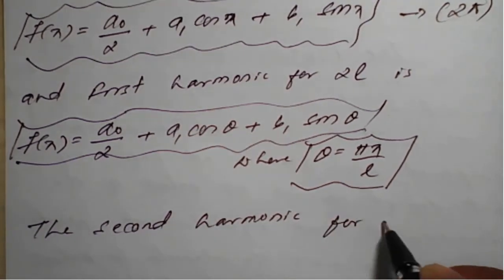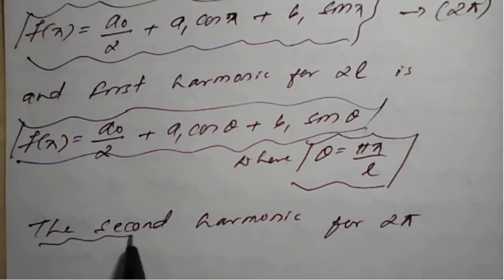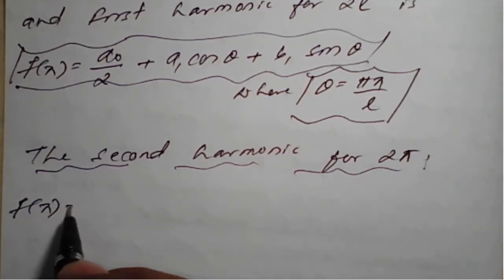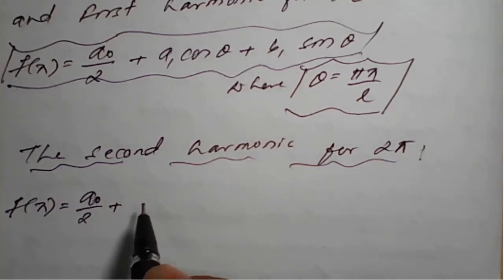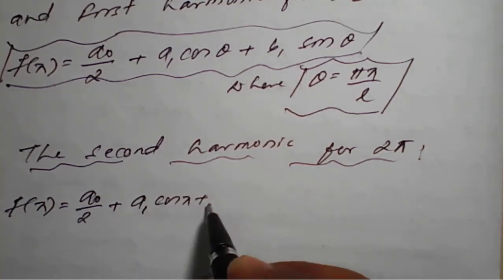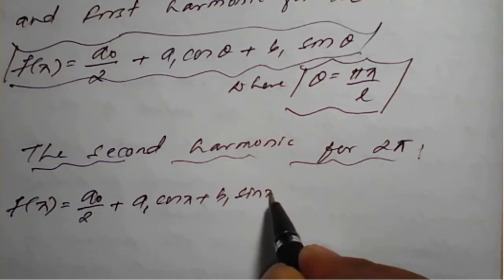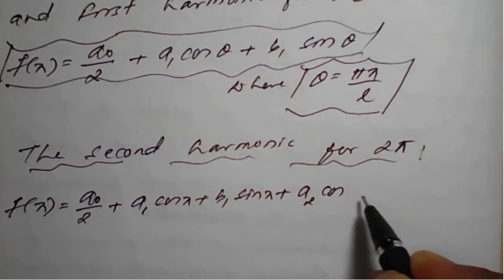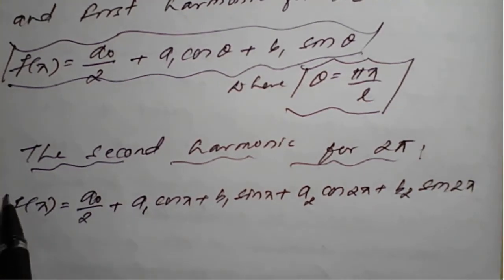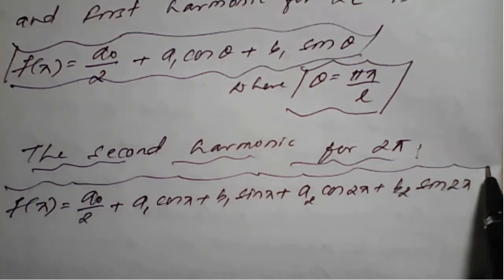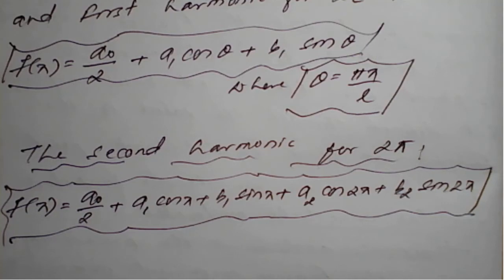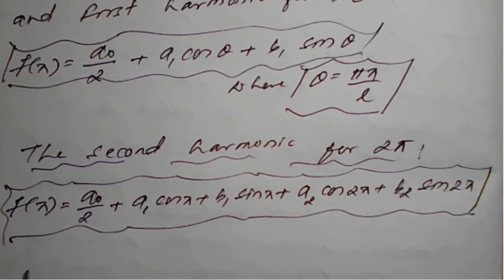The second harmonic for period 2π is: f(x) = a₀/2 + a₁ cos(x) + b₁ sin(x) + a₂ cos(2x) + b₂ sin(2x). The second harmonic includes terms up to n = 2. This is the second harmonic of the given Fourier series.